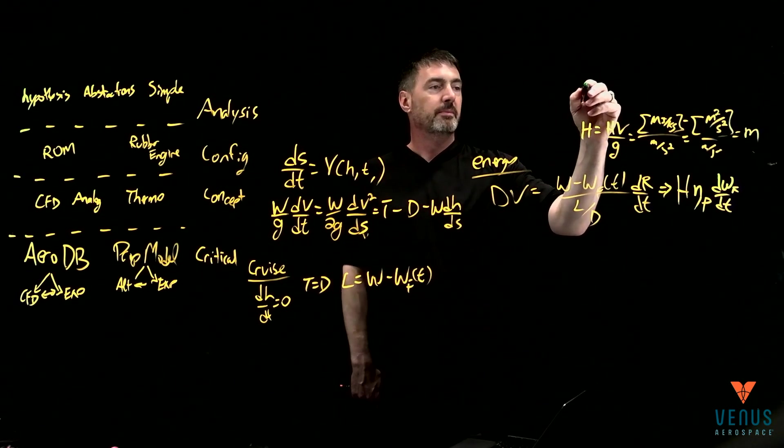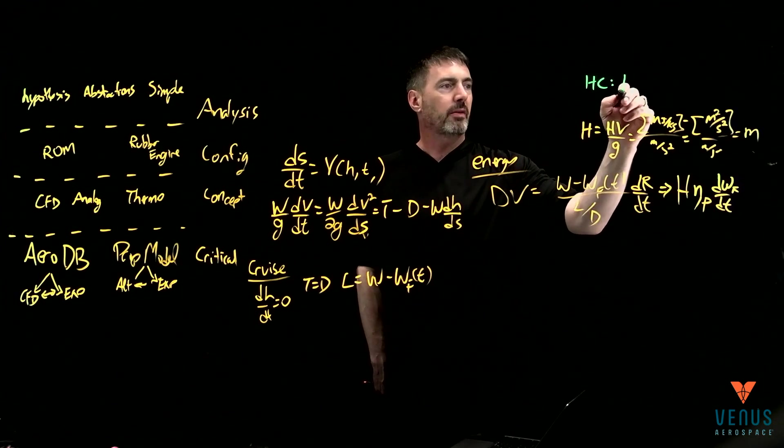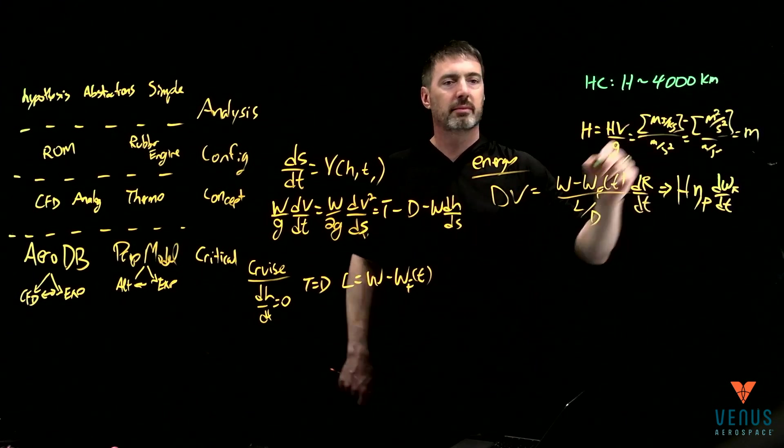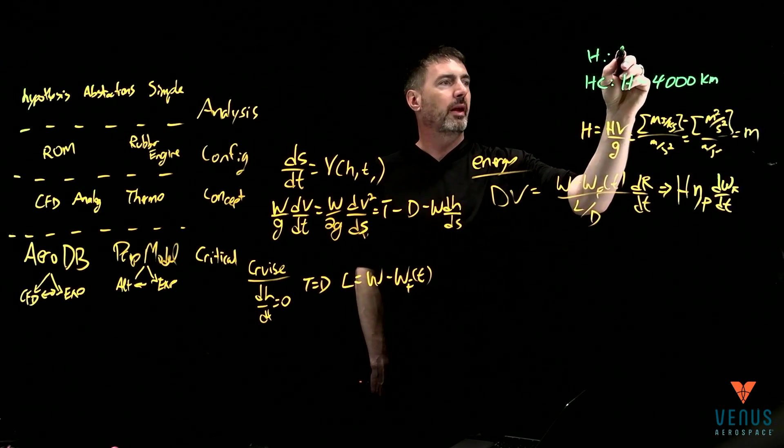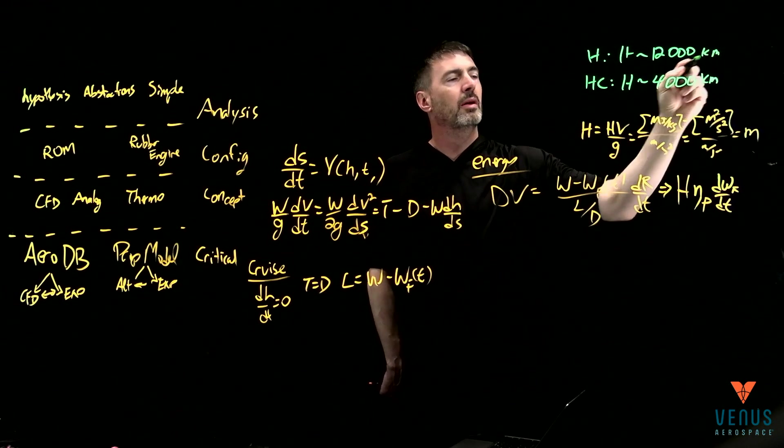So for hydrocarbons, the H is roughly 4,000 kilometers. And then for hydrogen, H is roughly 12,000 kilometers.